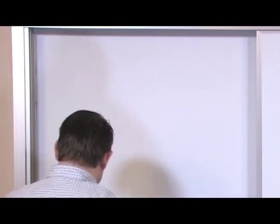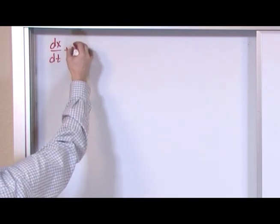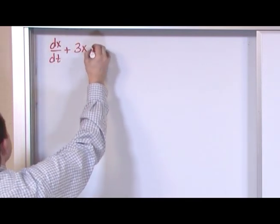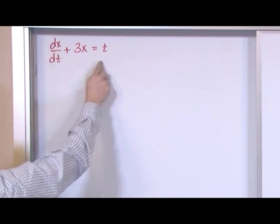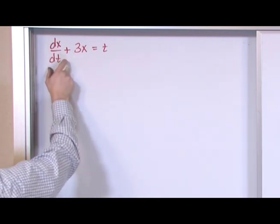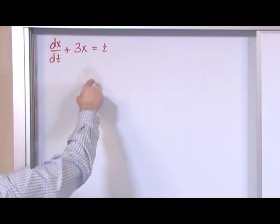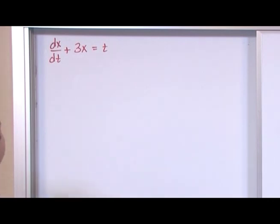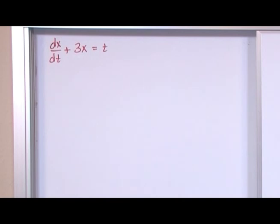Let's go ahead and say that our differential equation is dx/dt plus 3x is equal to t. First, check and make sure: is this first-order linear? Yes, it is, because it's a first-order equation — it's got one derivative — and it's got a function of time here, which is just one. So it's really there, and on top of that, it's already in standard form because there's nothing out in front. So we don't even need to do that first step where we divide by the leading term. We've already got a little bit of a head start.